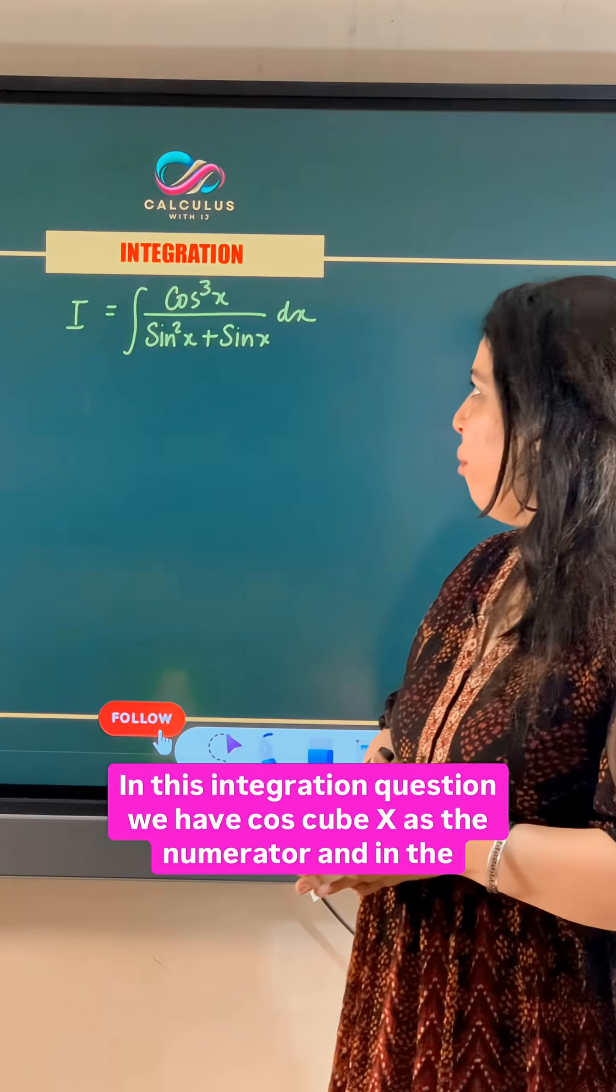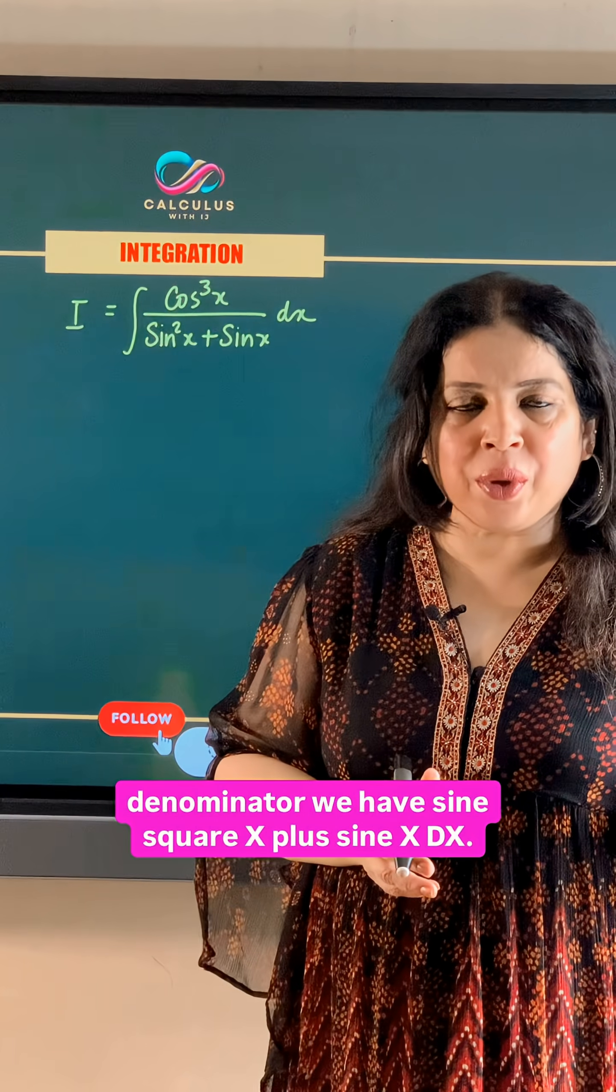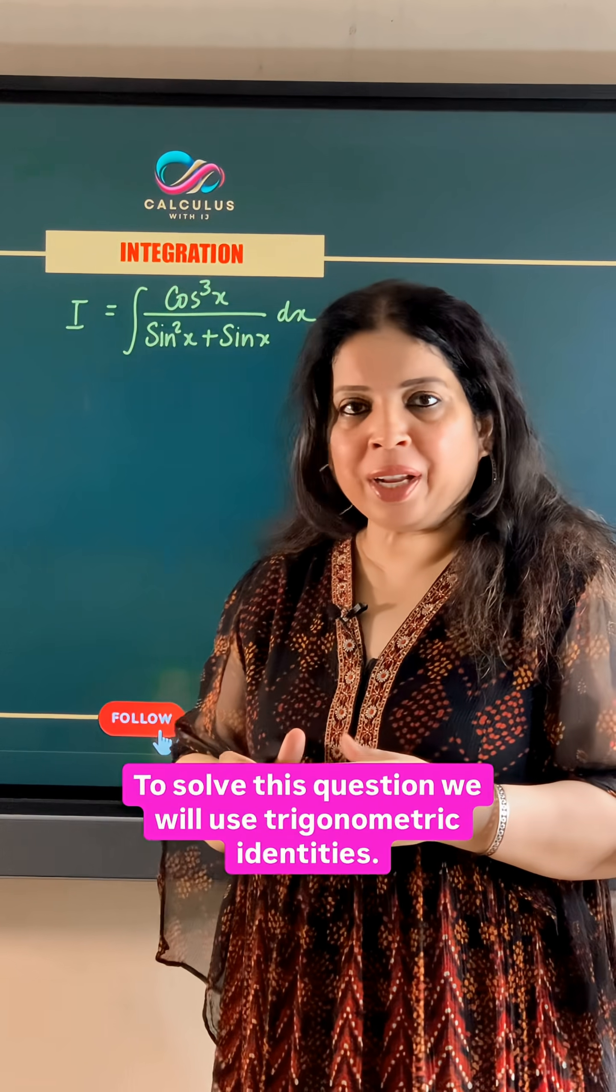In this integration question, we have cos cube x as the numerator and in the denominator we have sin square x plus sin x dx. To solve this question, we will use trigonometric identities.